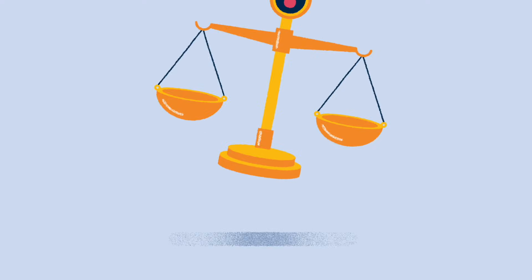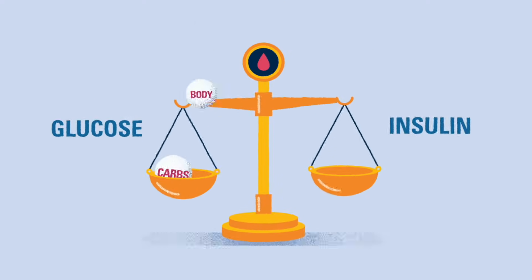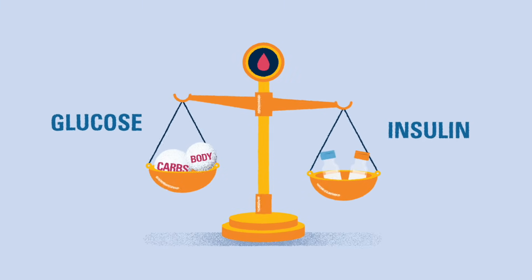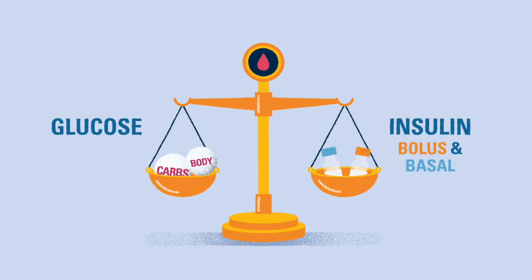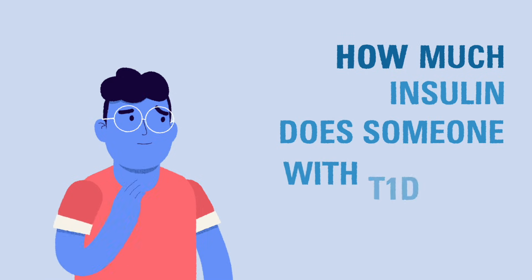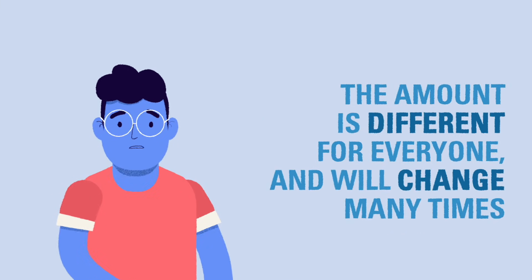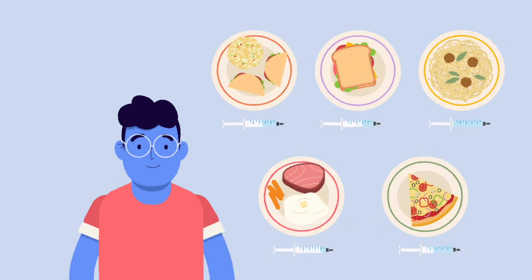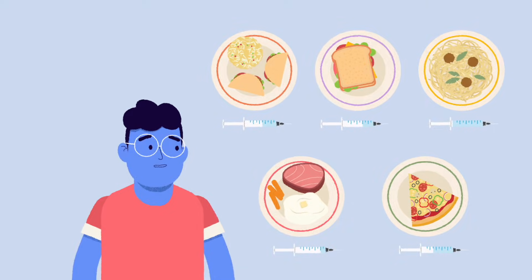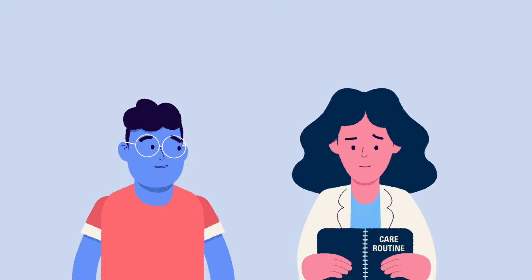At this point you should know that insulin is needed to balance glucose in the body, and that there are two different kinds of insulin: bolus and basal, or rapid acting and long-acting respectively. You may be wondering how much insulin each person with T1D needs every day. The answer is complicated — it's different for each individual, and will change many times throughout their life. In this video we'll show you how to calculate the amount of insulin needed for each meal or blood glucose correction.